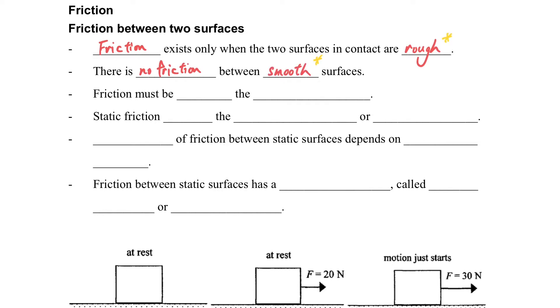So in the question, rough and smooth are very important hints for us to know whether friction exists. And the friction must be along the contact surface.